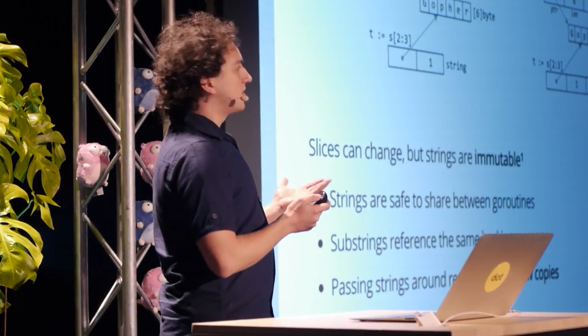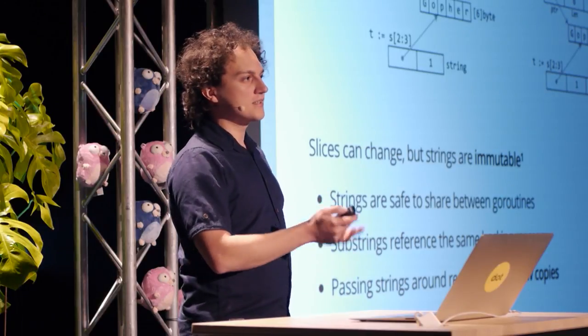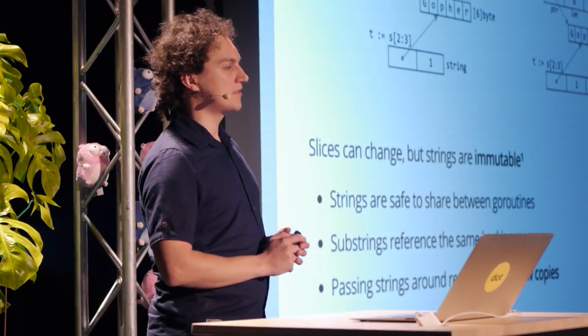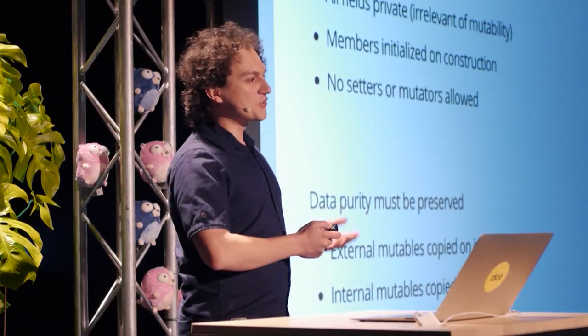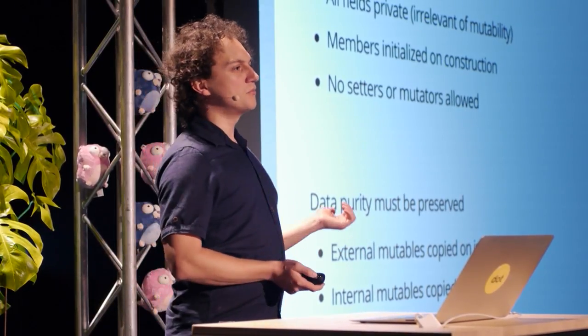Can we do immutability ourselves? The answer is yes — we can do user-space immutability. Obviously we cannot make existing types immutable since Go doesn't have that concept, so we create our own custom structures that we ensure remain immutable through our own effort. How? Simply make all member fields private. If something is public, it's modifiable — we don't want that. We need to initialize all members upon construction, since we're not allowed to modify them afterwards. We may have constructors, but we are not allowed to have any mutators inside our data structure.